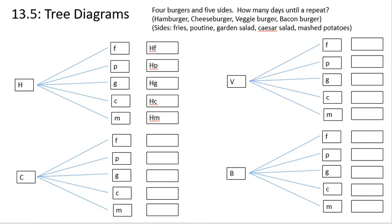You can see now I filled in all of the rest of the tree diagram. And this is what it means. This capital C means cheeseburger. And here we have fries, poutine, garden salad, Caesar salad, and mashed potatoes.